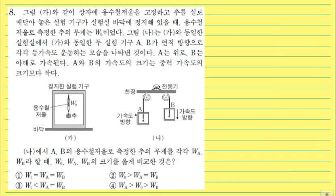자 8번 문제입니다. 그림 가와 같이 상제 용수철 저울을 고정하고 추를 실로 매달아 놓은 실험기구가 실험실 바닥에 정지해 있을 때 용수철 저울로 측정한 무게가 W₀라고 되어 있습니다.